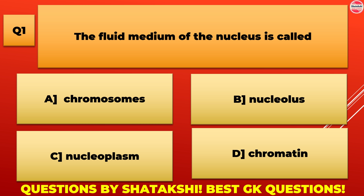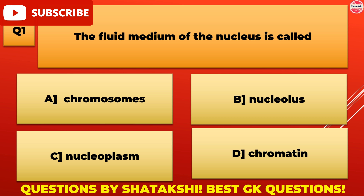The fluid medium of the nucleus is called: A. Chromosomes, B. Nucleolus, C. Nucleoplasm, D. Chromatin. C. Nucleoplasm is the correct answer.